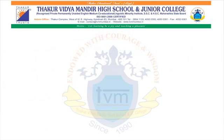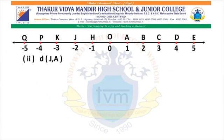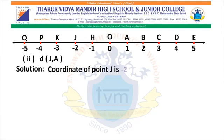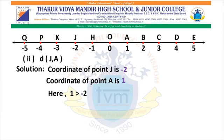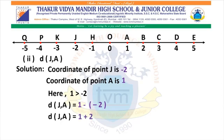Here we have the next question: find distance between point J and A. The coordinate of point J is minus 2. The coordinate of point A is 1. So, 1 is greater than minus 2 — the greater coordinate is 1 and the smaller coordinate is minus 2. Therefore, distance J, A equals greater coordinate minus smaller coordinate, that is 1 minus (minus 2). We will solve the bracket: minus into minus becomes plus. Therefore, distance J, A equals 1 plus 2. Distance J, A equals 3.